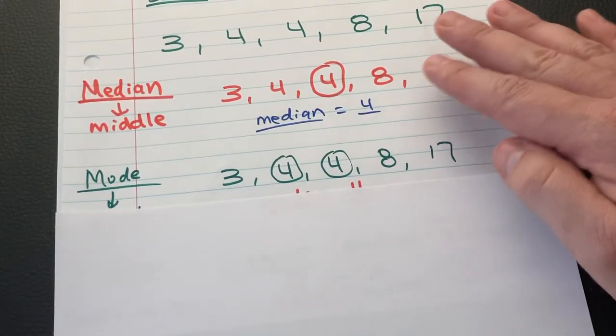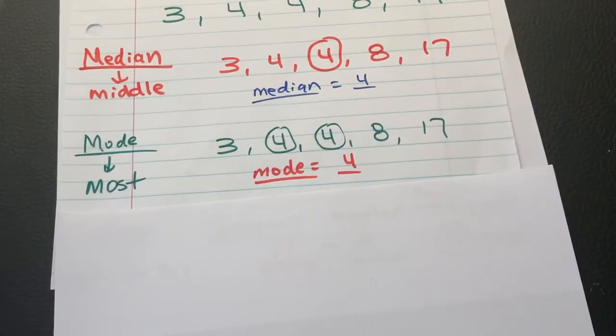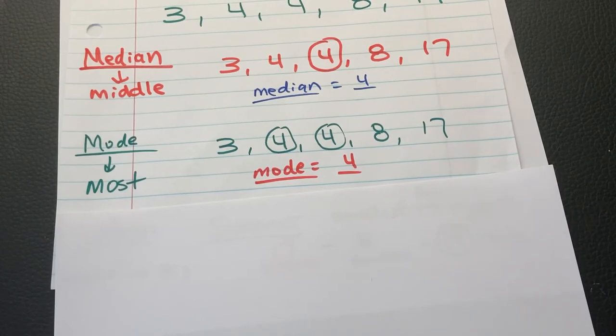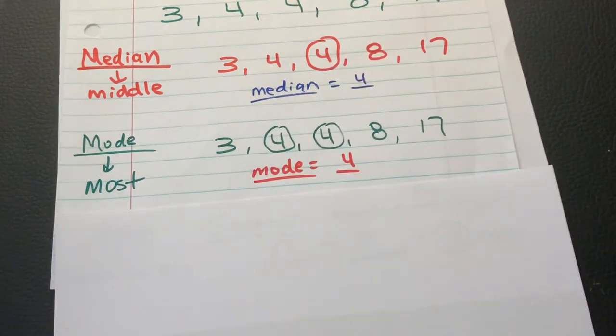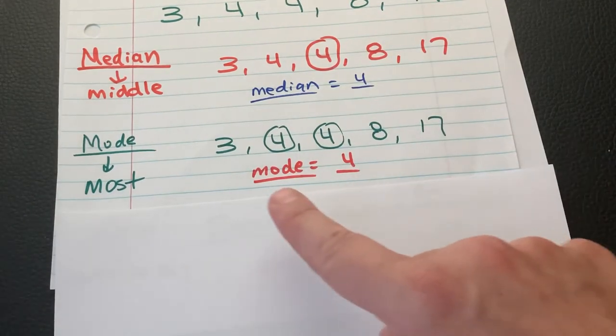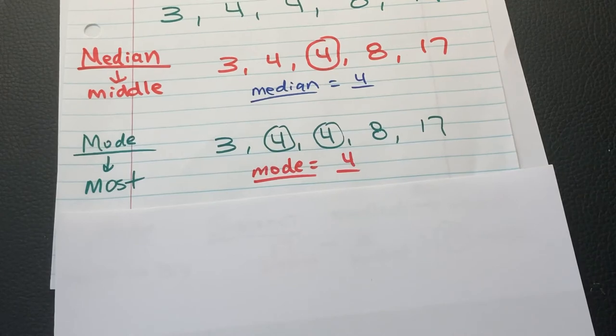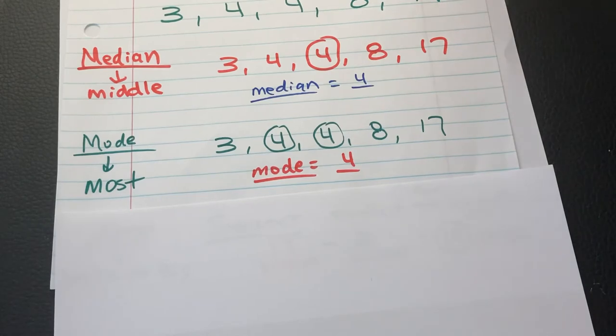Then the mode is which number do you see the most? Once again, the number 4 shows up two times, the number 3 one time, the number 8 one time, the number 17 one time. This is a simple one. 4 is the mode because it shows up the most. Median, middle, mode, most. Now, here's a trick question. What if all of the numbers are different and it's a tie? Simple. There's no mode then. If it's a tie, there's no mode. But for all of your assignments for today, they all have a mode. That's a little hint there.